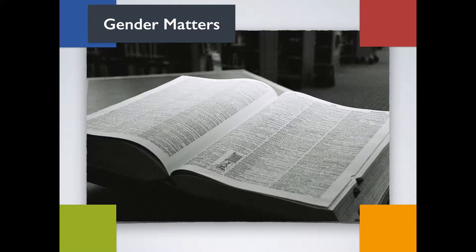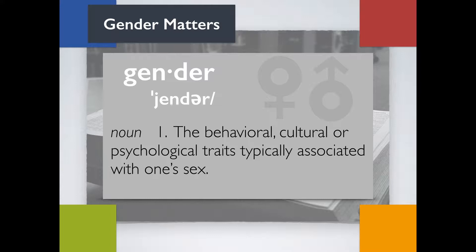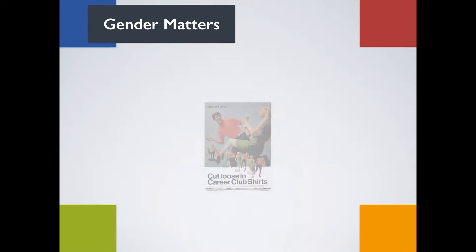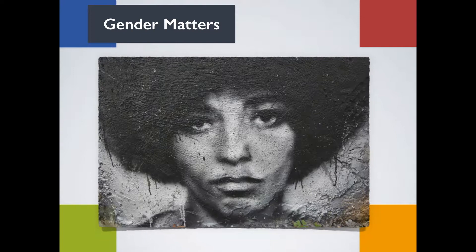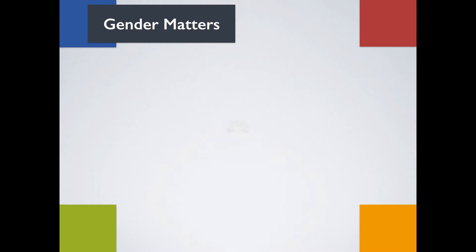There are multiple definitions for the term gender. The definition we'll use refers to the behavioral, cultural, or psychological traits typically associated with one sex. Our societal views are in a constant state of change. In the 50s and 60s, people spoke freely about gender differences. The 70s brought feminist movements where it was taboo to discuss differences in gender — there was a fear that one gender would be viewed as superior. In the last couple of decades, we've come full circle and it's okay to talk about gender differences again.